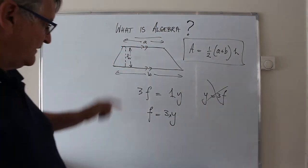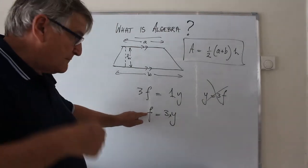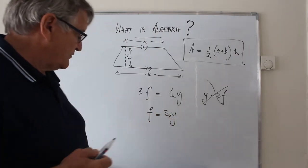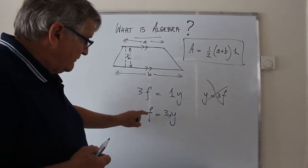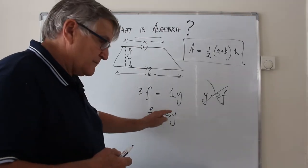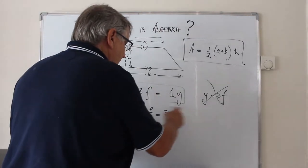And what we say is, let f be the number of feet that we're interested in and let y be the number of yards we're interested in. And we know that the formula is feet, the number of feet is equal to 3 times the number of yards. So labels are a no-no.